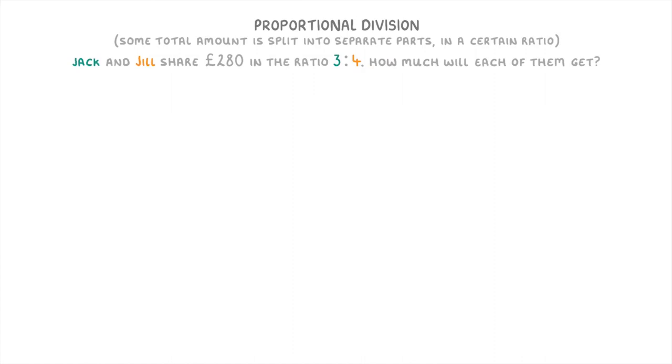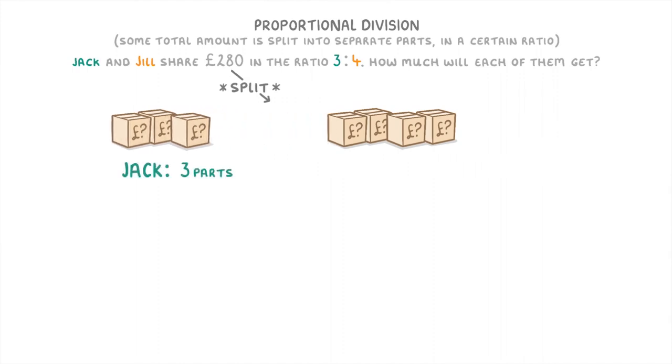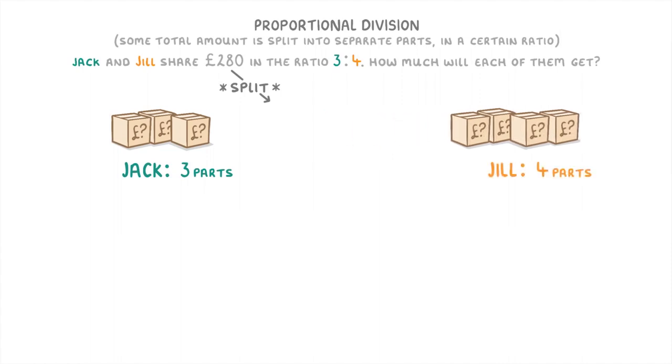Now there's a couple of different ways that you could do a question like this, but in my opinion the easiest way to do it is to imagine the £280 being split into a number of different parts, with Jack getting 3 of those parts and Jill getting the other 4 parts.